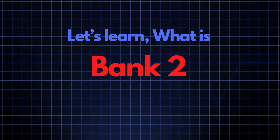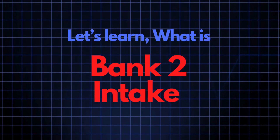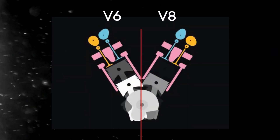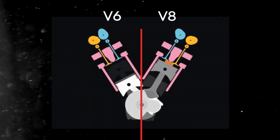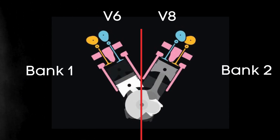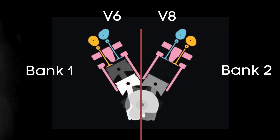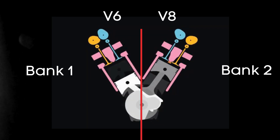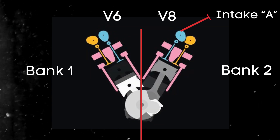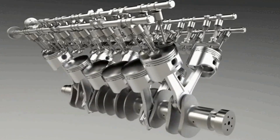Now let's learn what the bank two intake camshaft is. In the case of V6 or V8 engines, there are two camshafts: bank one and bank two. For dual overhead camshaft, DOHC engines, there are two camshafts per bank — intake and exhaust.